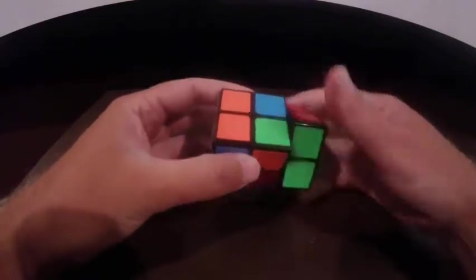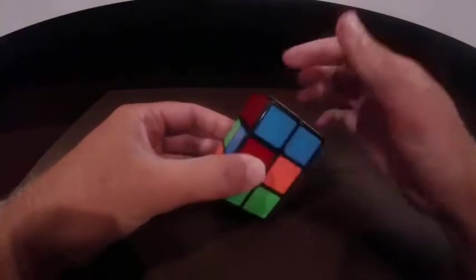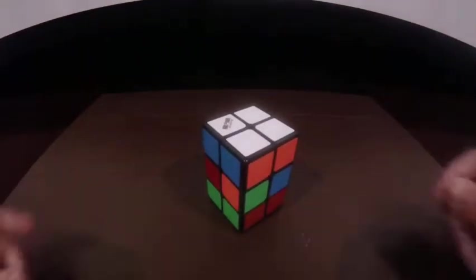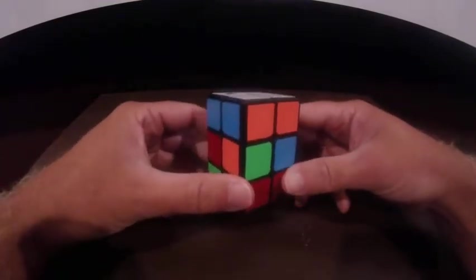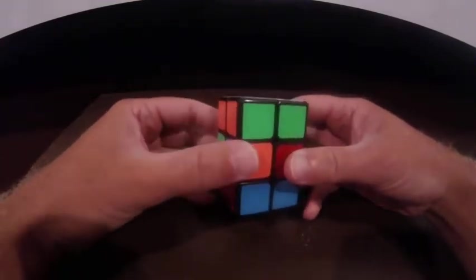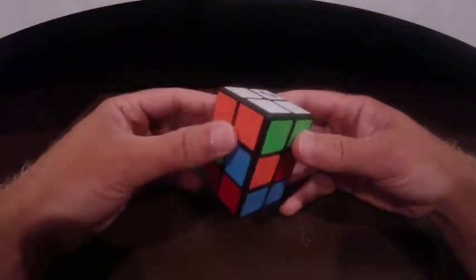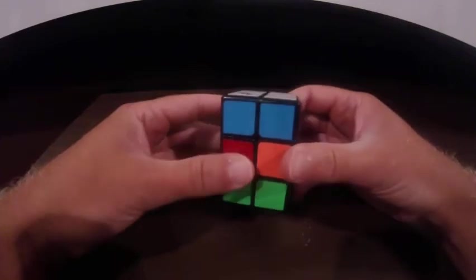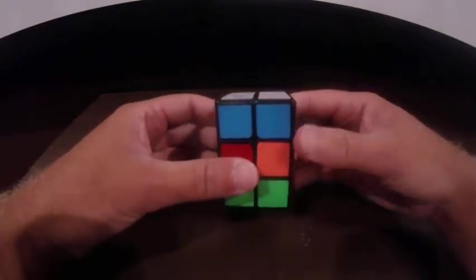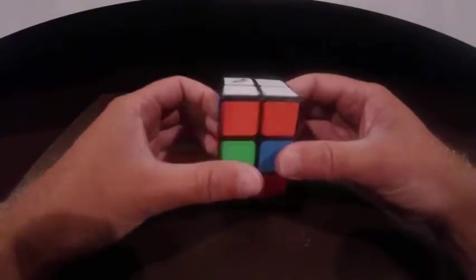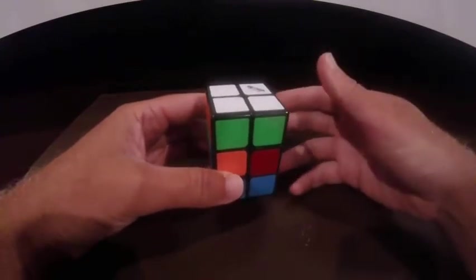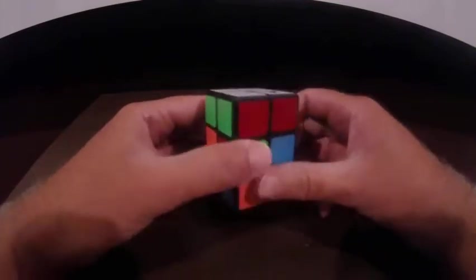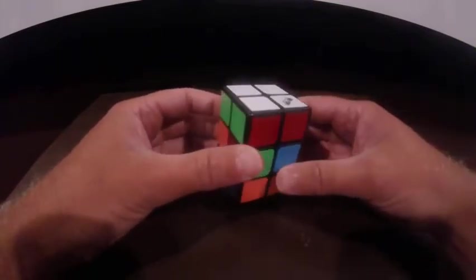Okay, so once you have the top and the bottom layer solved, you're ready to move on. Okay, so I do want to mention that it is possible when you're doing that last step to not have any pieces that are matched up. And if that happens, just do the algorithm. It doesn't matter how you hold it. Just hold it any way you want. Do the algorithm. And then that will match up a couple of colors like I had. And then just do the same way that I just showed you.